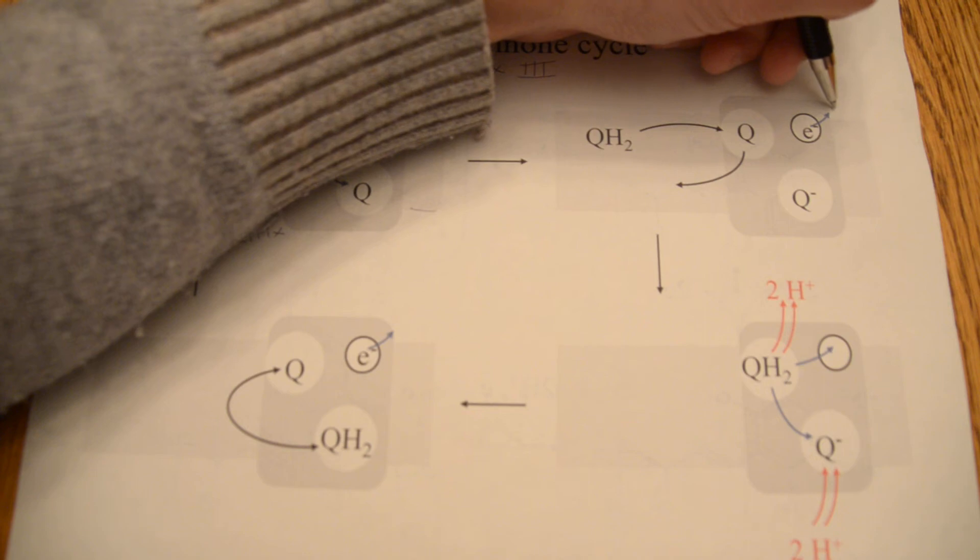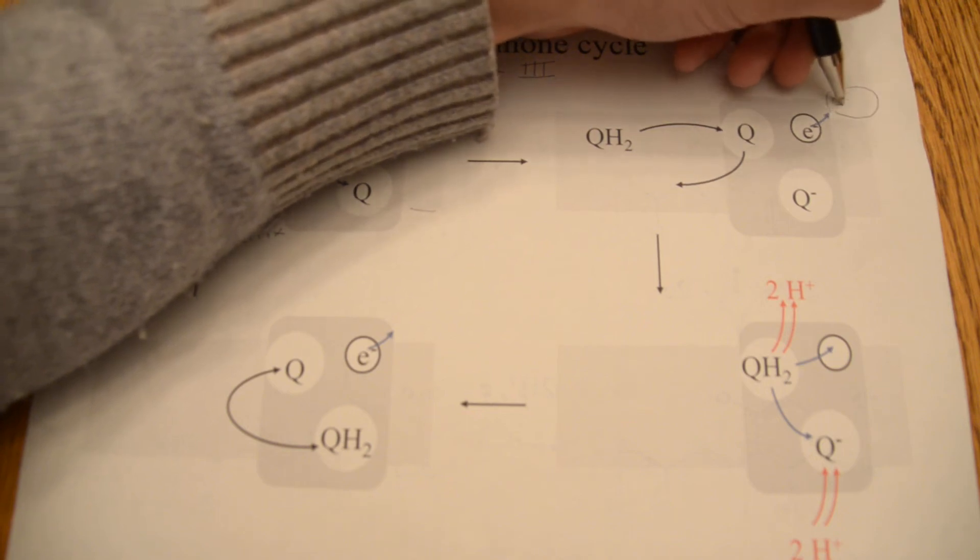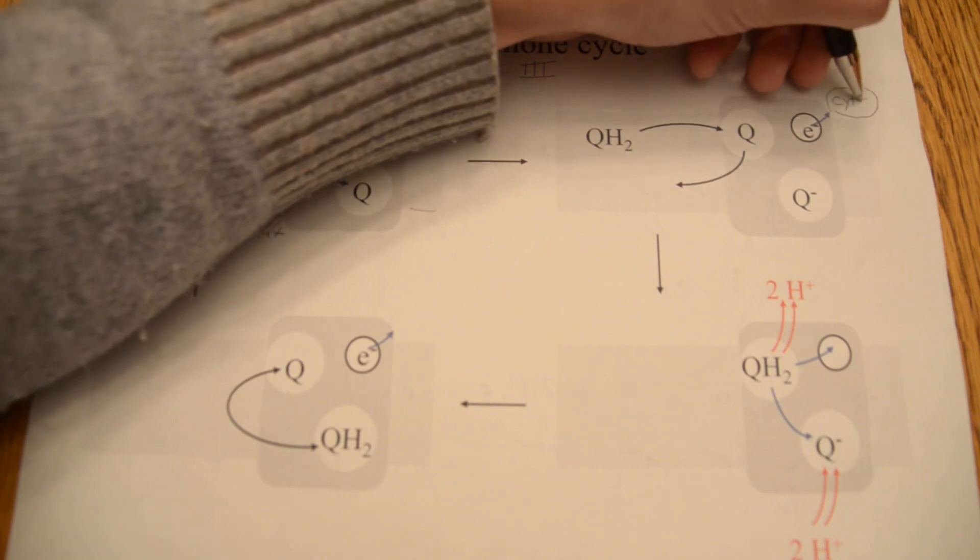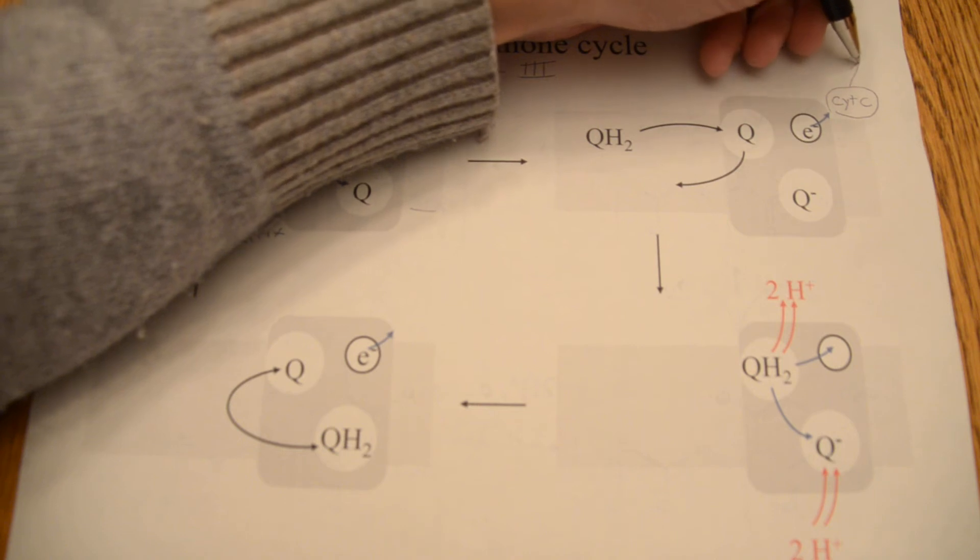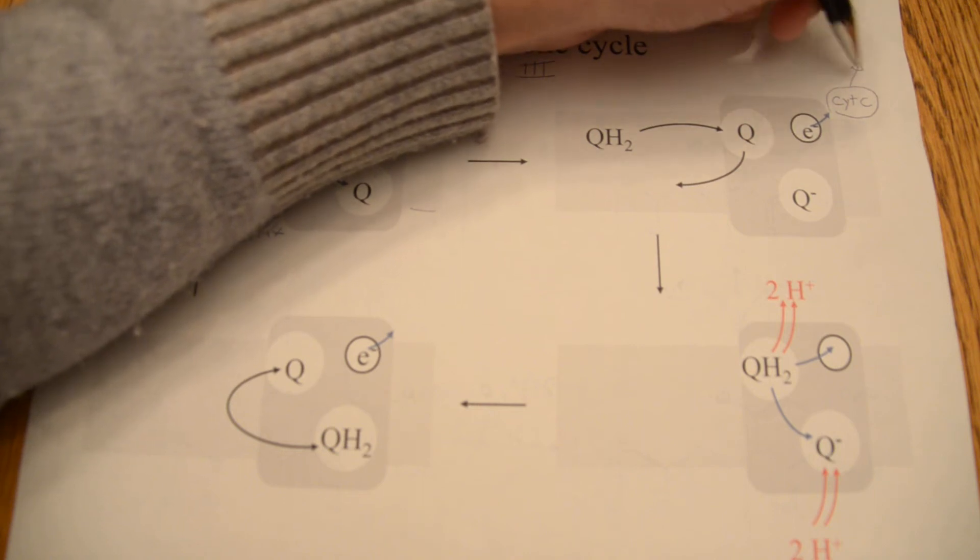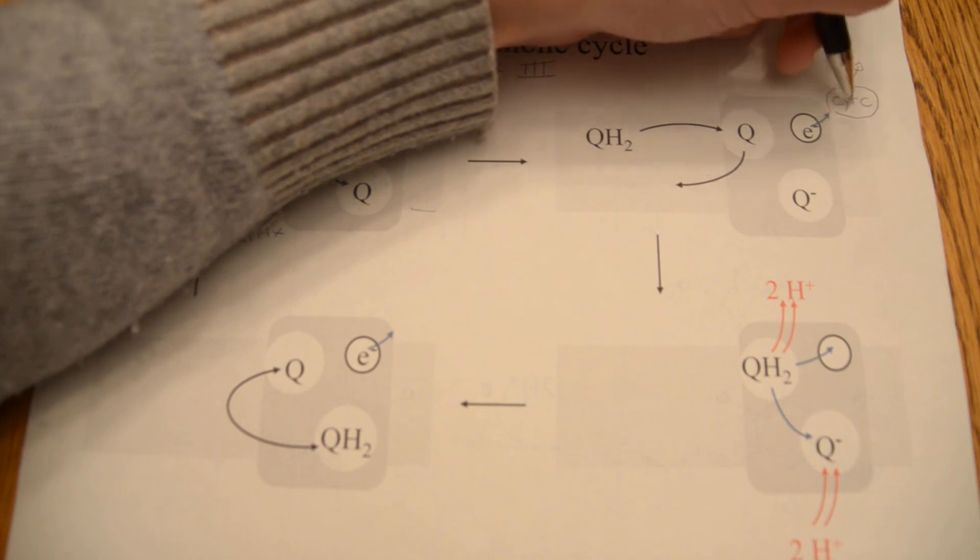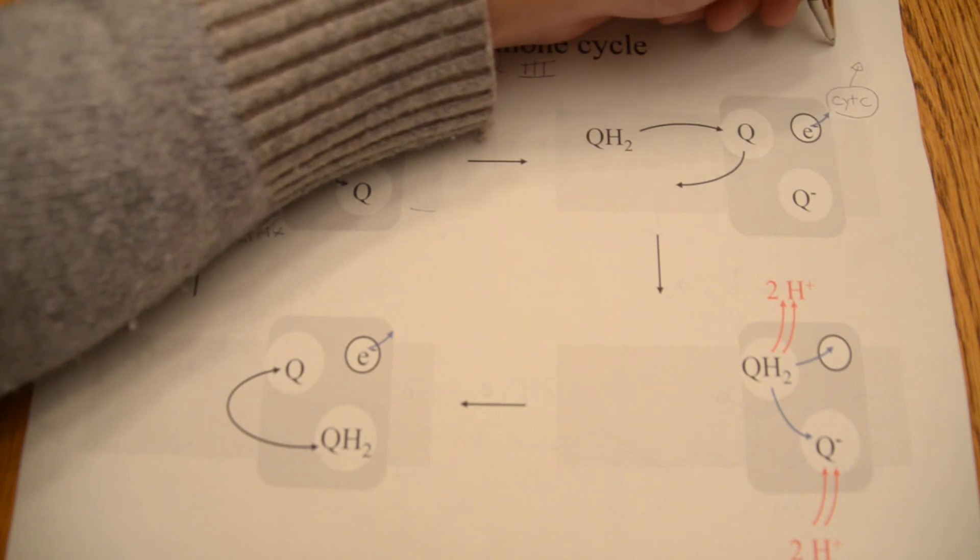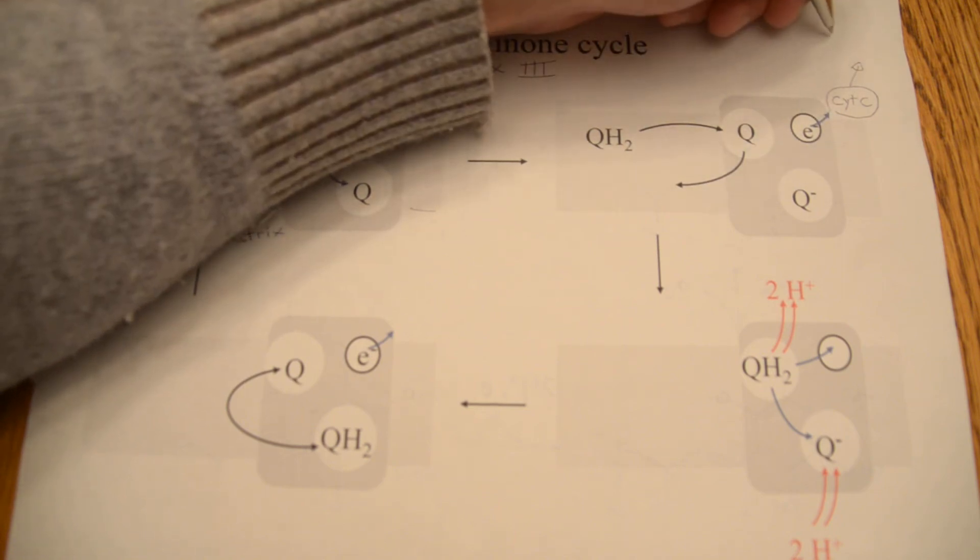This electron will be passed on to cytochrome C, and this cytochrome C can move along in the cytosol and pass this electron that it accepted on to cytochrome C oxidase or complex 4.